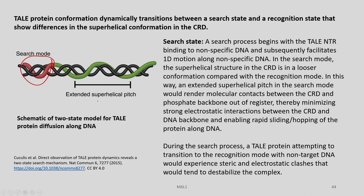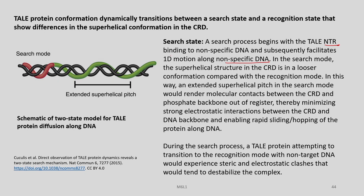In the search state, the search process begins with the TAL N-terminal binding to non-specific DNA because it is sequence-invariant, and subsequently facilitates one-dimensional motion along non-specific DNA — it will bind and just move around in search mode. The super-helical structure in the search mode has the CRD in a looser conformation compared with the recognition mode. The NTR binds due to non-specific interactions, and the CRD will also bind loosely to the DNA in this engagement or search mode where the TAL proteins try to find their cognate partner.